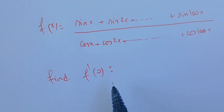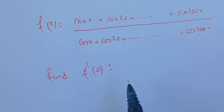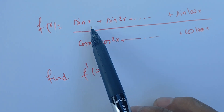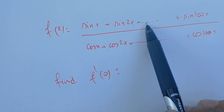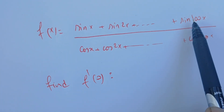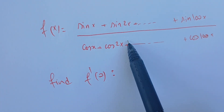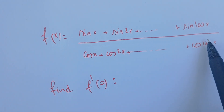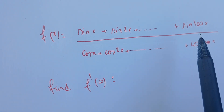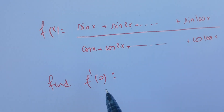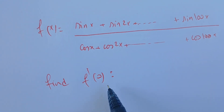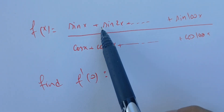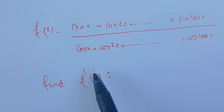In this video we are given the following function: f(x) is the sine of x plus sine 2x, and so on until sine 100x, over cosine of x plus cosine 2x through cosine 100x. We want to compute f prime at zero — that is, the derivative of f at zero.